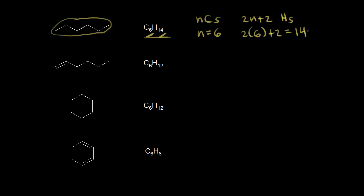Let's compare hexane with 1-hexene. Now we have a double bond present and that changes the molecular formula. Now the molecular formula is C6H12. We have the same number of carbons — six — but we have 12 hydrogens. Up with hexane we had 14, so we're missing two hydrogens. We say that's one degree of unsaturation, or a hydrogen deficiency index equal to one — it's like we're missing one pair of hydrogens.